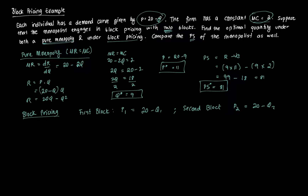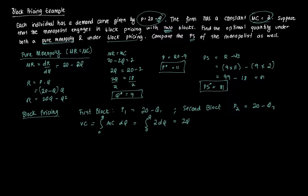Before calculating producer surplus, we need to find variable cost. Variable cost is the integral from zero to Q of the marginal cost function dQ. Since marginal cost is a constant, that's the integral of 2 dQ from zero to Q, so variable cost equals 2Q.